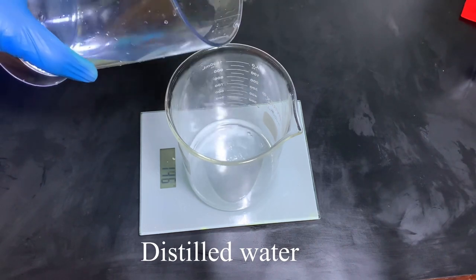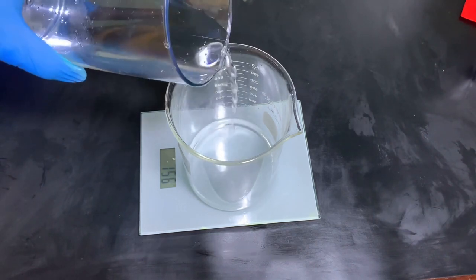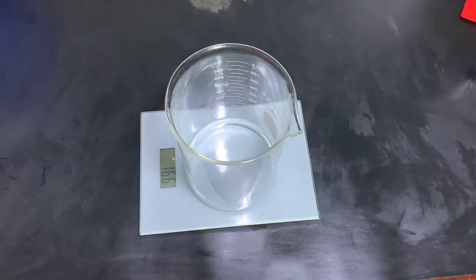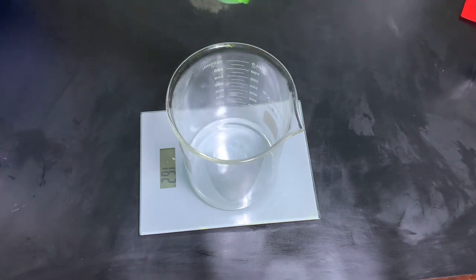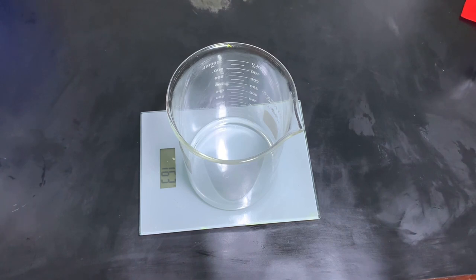We're going to be using those same butters, but this time we're making a product that is more stable and will have the same consistency despite the weather. That's the emulsified body butter. We're introducing water and an emulsifier to ensure the water and oils bind together, because water and oil do not mix.